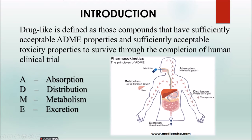Second is distribution — how the drug is distributed in your body, where all the transporters, blood vessels, and everything do that work. Number three is metabolism — how the drug is going to be broken down and how the actions are governed by the liver. And finally, the unabsorbed drug — which is left over, not transported, used, or broken down — how it is going to be excreted. These four processes determine whether a compound is drug-like.